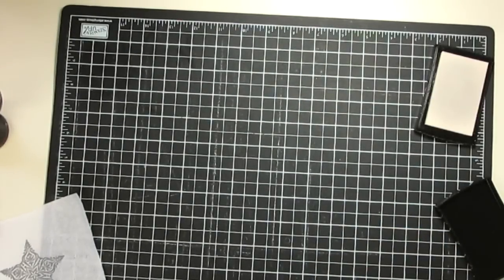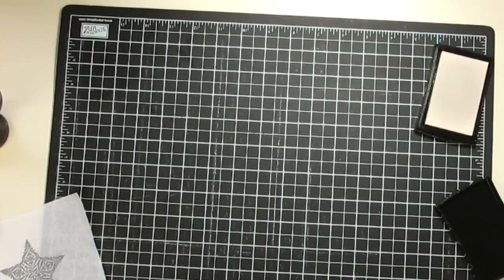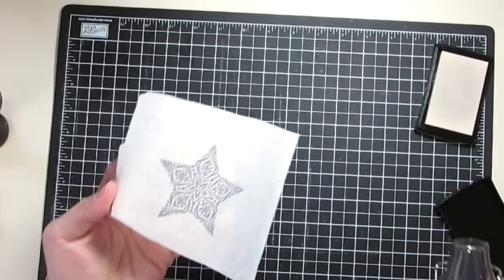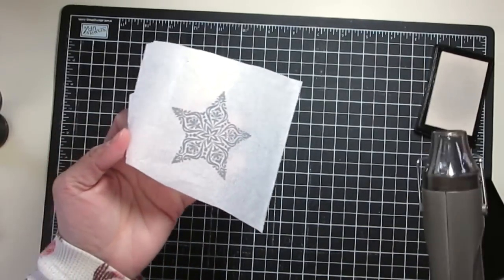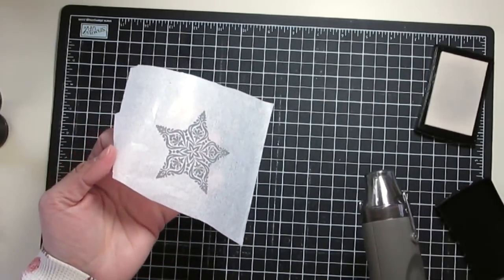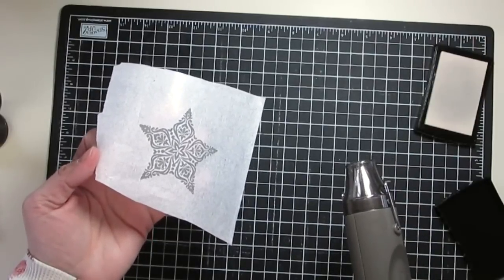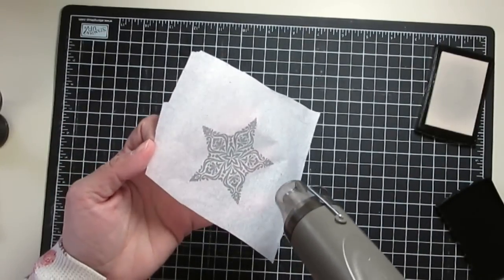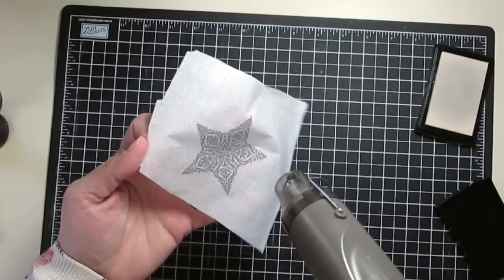I'm going to move that out of the way and then I'm going to come in with my heat gun. You're going to heat this. You want to be careful because it's tissue paper, it doesn't take very long and you don't want to burn yourself or start the tissue paper on fire. So you just go ahead and melt that embossing powder.